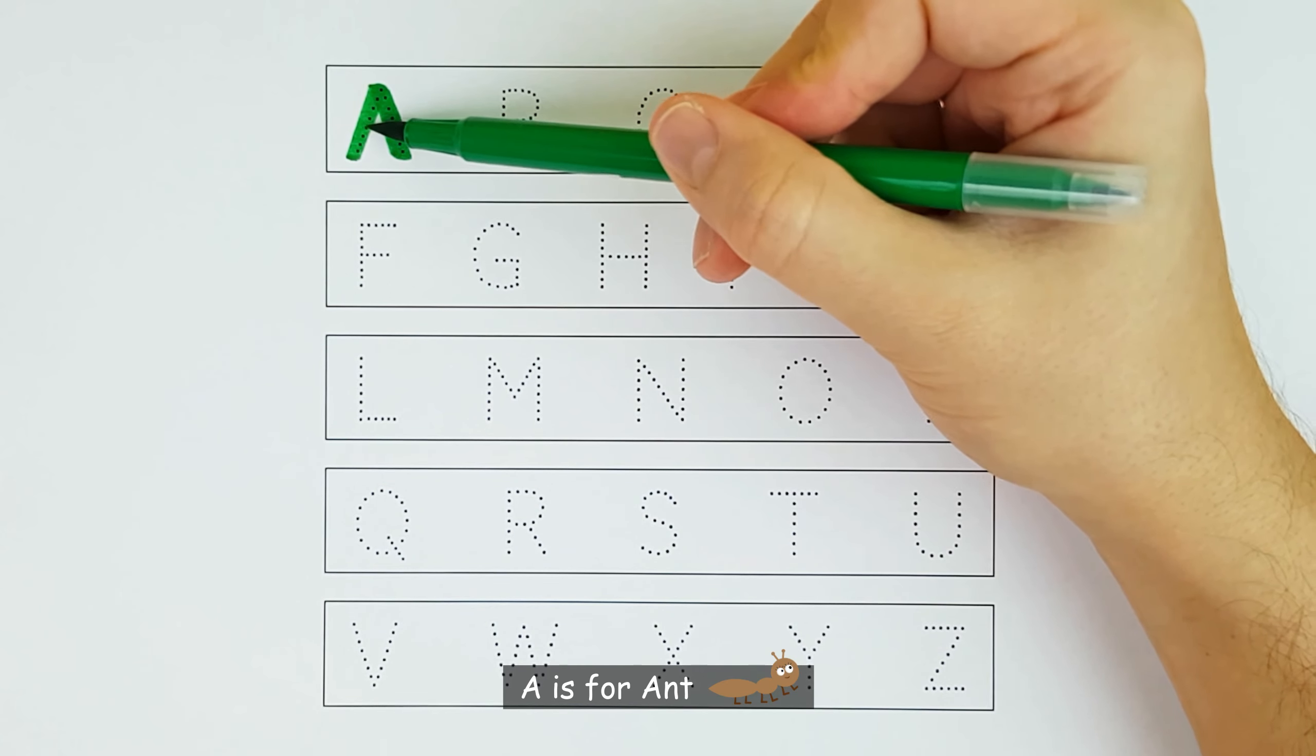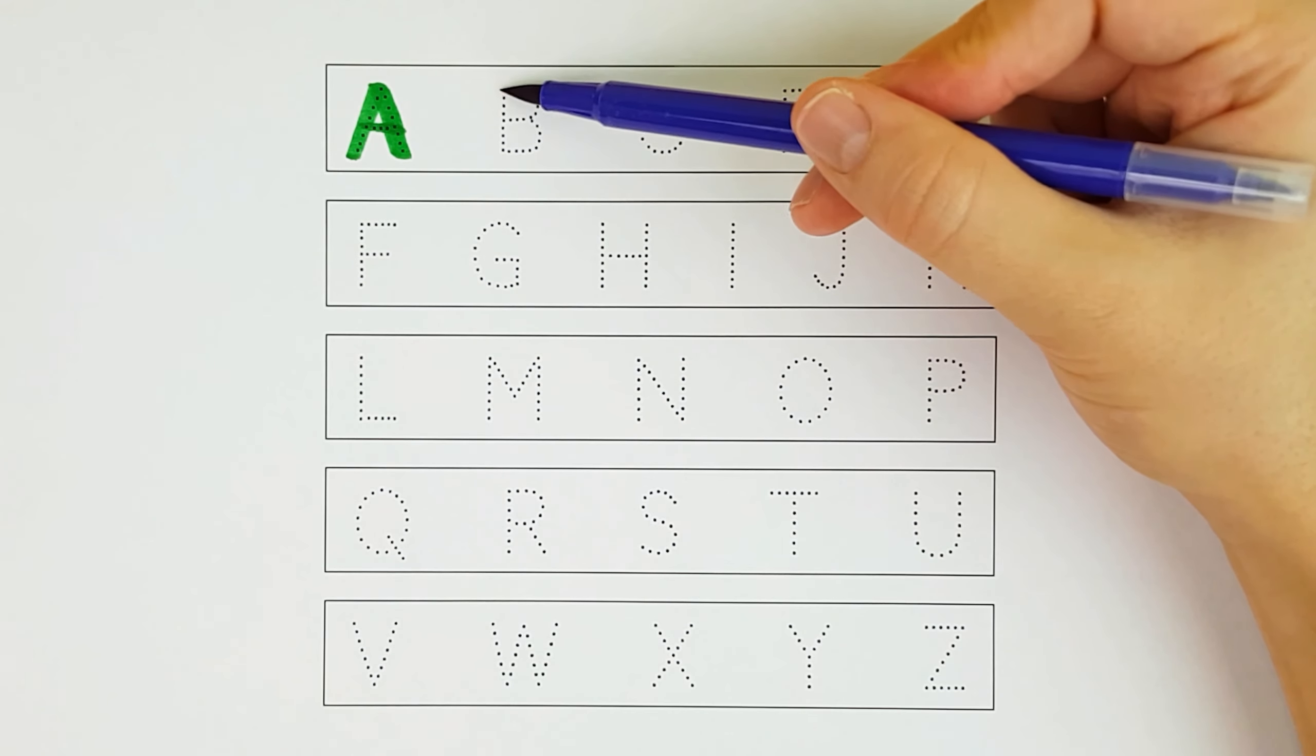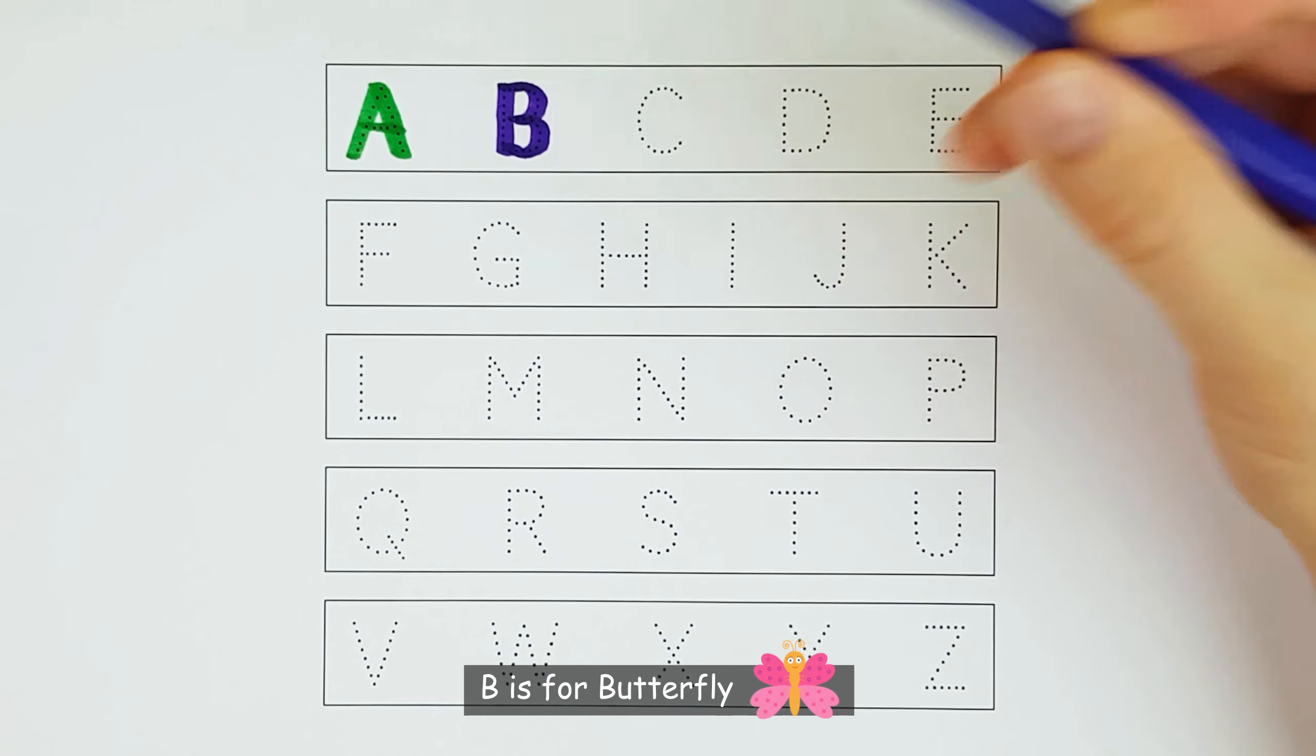A. A is for Ant. B. B is for Butterfly. C. C is for Canary.